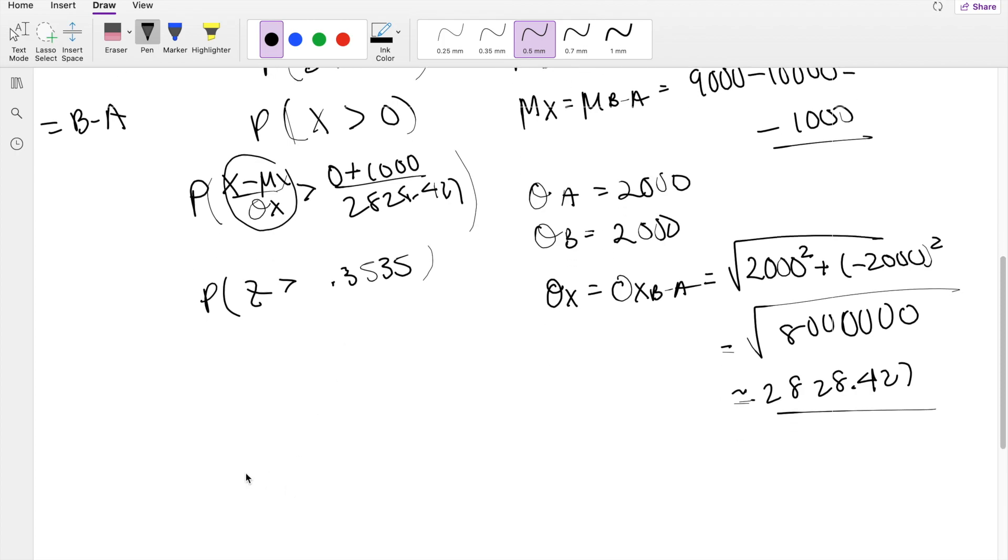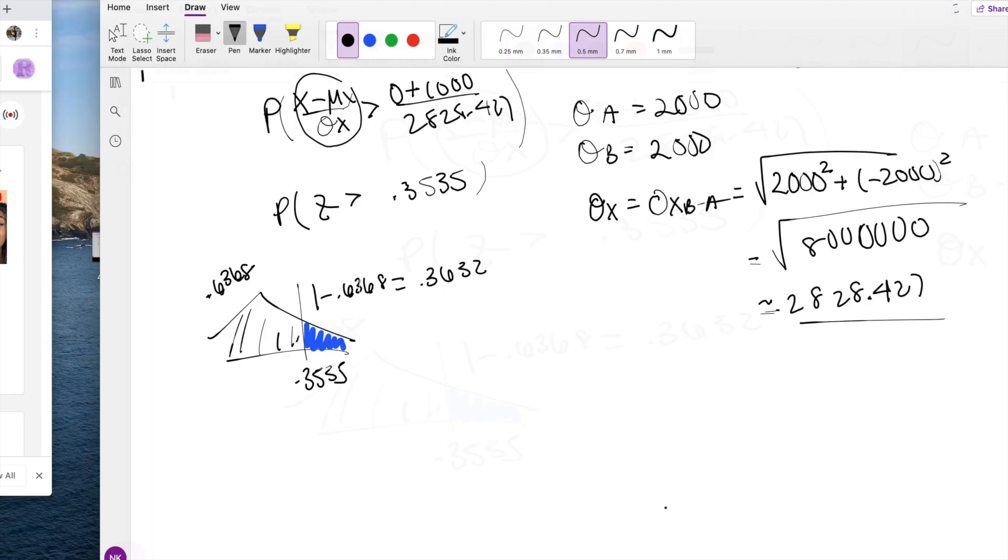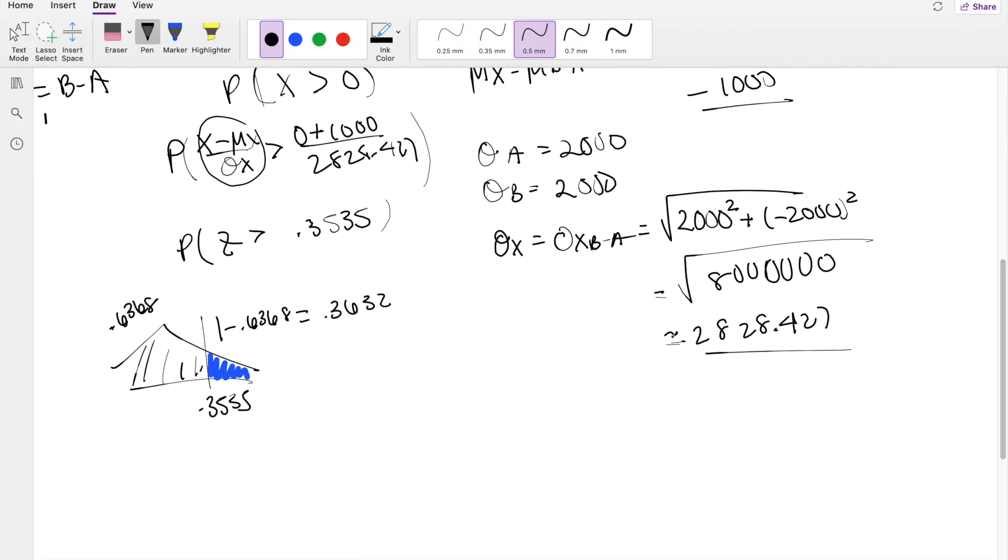So we have to pull up our Z table here. So we're looking for Z greater than 0.3535. So 0.35 corresponds to 0.6368, and they give you the normal table on the exam. And 0.6368 actually corresponds to this part right here, but the area that we're looking for is where Z is greater than this part. So we can actually just do 1 minus 0.6368 to figure out what that area is, which is equal to 0.3632. So the probability that B's profits is greater than A is equal to 0.3632.